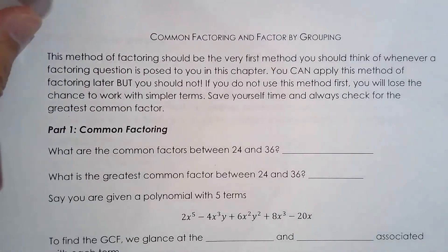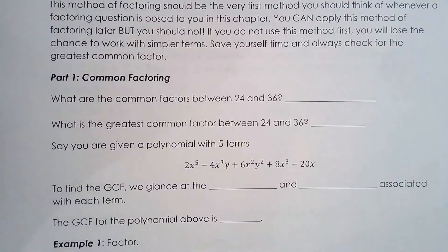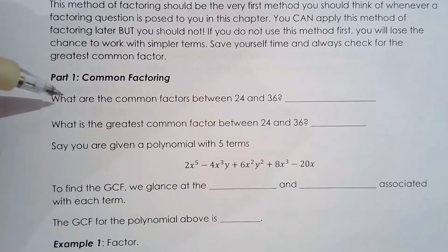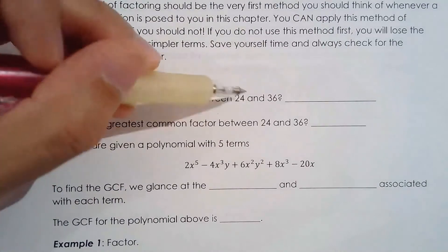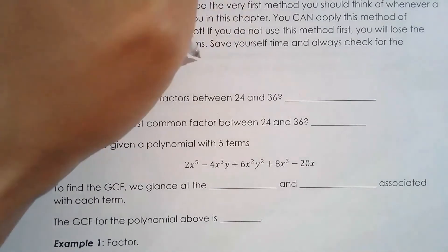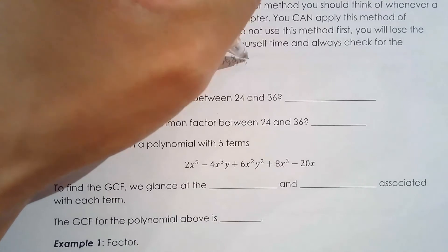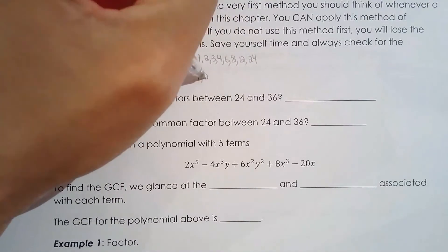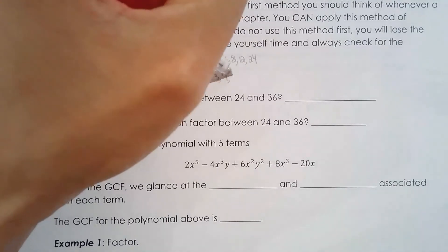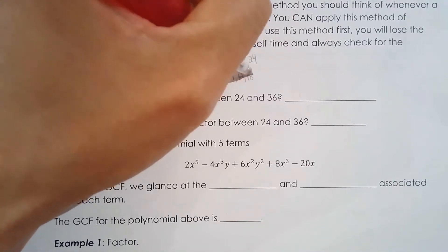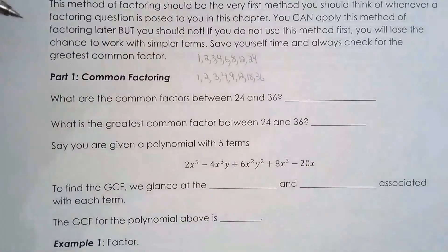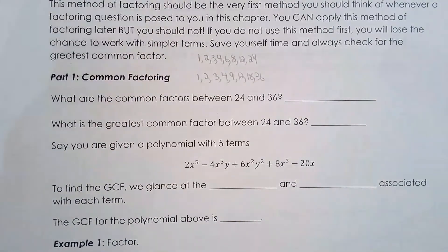The first few techniques are common factoring and factoring by grouping. Before we move on, we're going to talk about some number sense from elementary school. What are the common factors between 24 and 36? First, what are the factors of 24? Hopefully you say 1, 2, 3, 4, 6, 8, 12, and 24. What about 36? 1, 2, 3, 4, 9, 12, 18, 36. I know those because I know my times table.